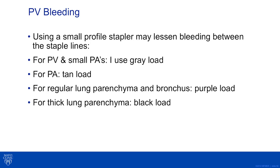Regarding pulmonary vein bleeding: using a small profile stapler may lessen bleeding between staple lines. I prefer a gray load stapler so that back-bleeding on the pulmonary vein is minimized. I also use a gray load for small pulmonary artery branches, as it provides a tighter staple line. For larger pulmonary artery branches, I prefer a tan load. For regular lung parenchyma and bronchus, a purple or green load. For thick lung parenchyma, a black load.